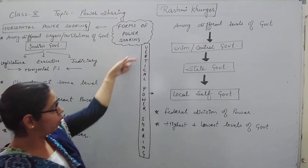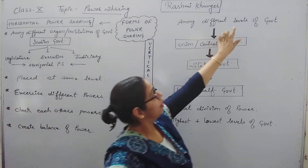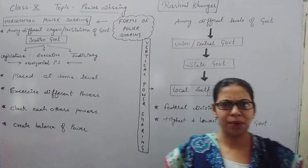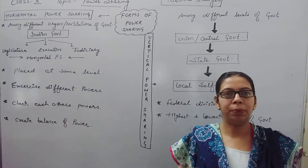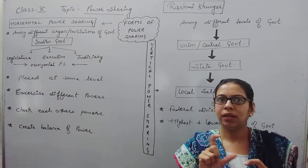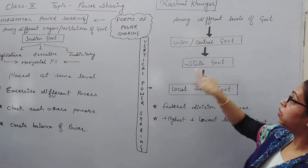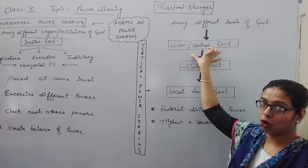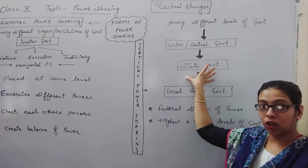Now, vertical power sharing — it is like this, placed vertically. Here we use the term 'levels', because unlike horizontal where all are at the same level, here they are placed at different levels. Like when teachers say your level is very high, or your level needs to improve — level means it can't be at one place. The levels here are: Union and Central Government, State Government — like Rajasthan, Punjab — and Local Self-Government.